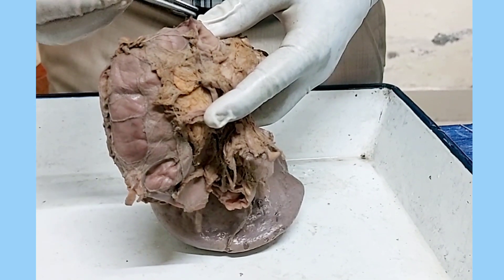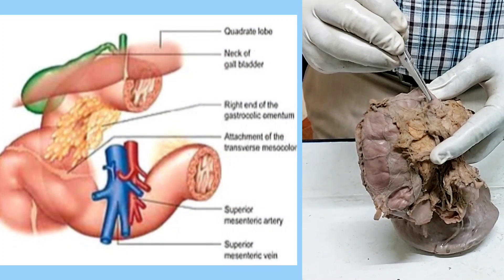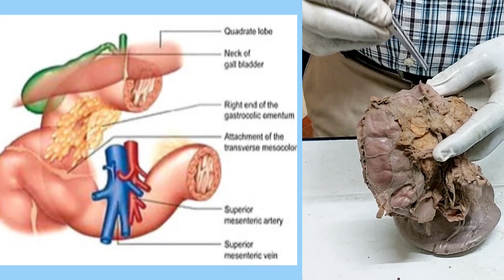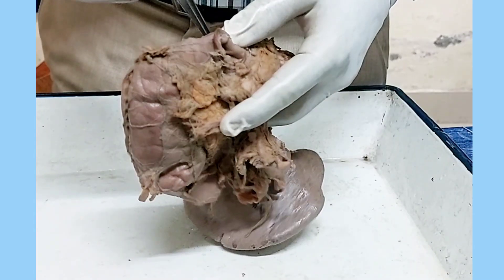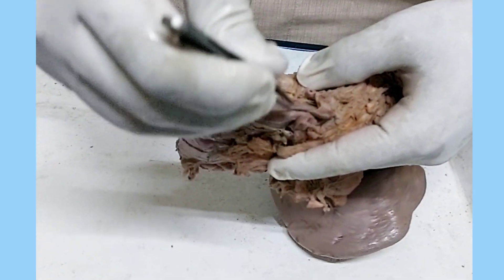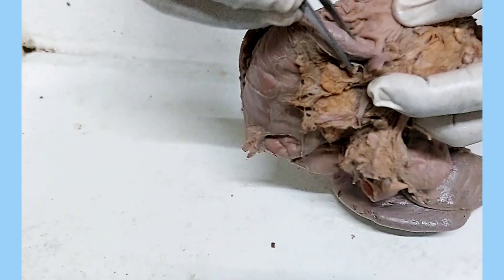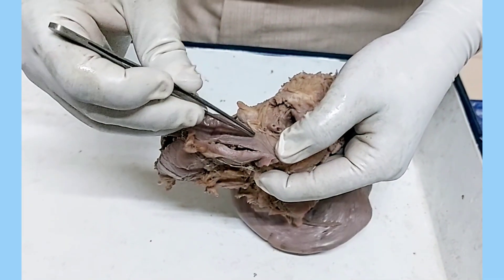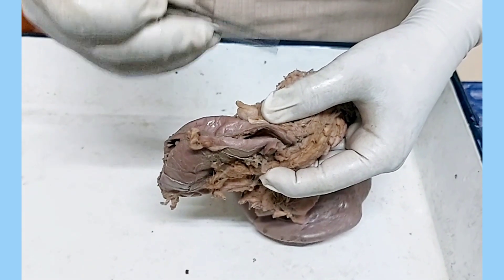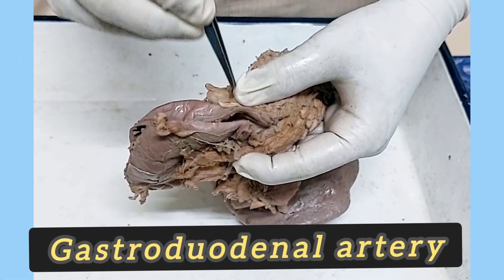On the liver you will find the duodenal impression, and also the neck and body of the gallbladder. So anteriorly you will get the body of the gallbladder, neck of the gallbladder, and the inferior surface of the right lobe of the liver. Posteriorly, you will get one important artery — the gastroduodenal artery — and also the portal vein and bile duct on the posterior surface of the first part of the duodenum. So the important posterior relations of the first part are the gastroduodenal artery, the common bile duct, and the portal vein. Clinically, if any ulceration occurs on the posterior wall of the first part of the duodenum and it perforates and erodes the gastroduodenal artery, there will be torrential hemorrhage.